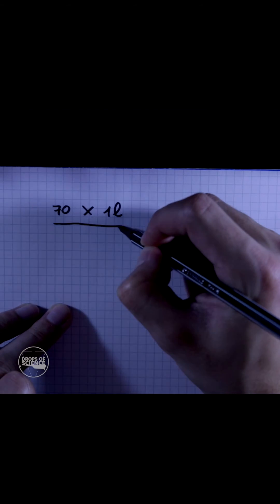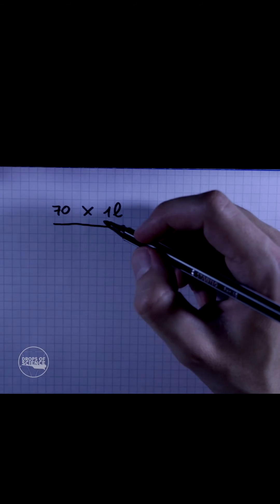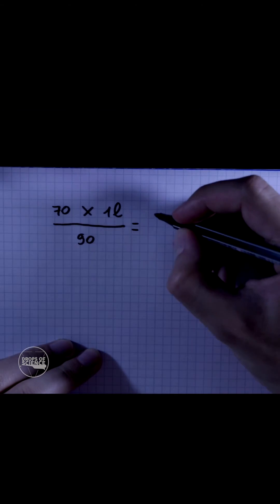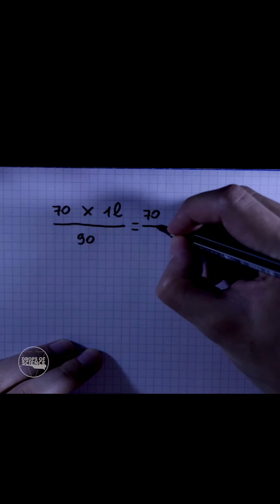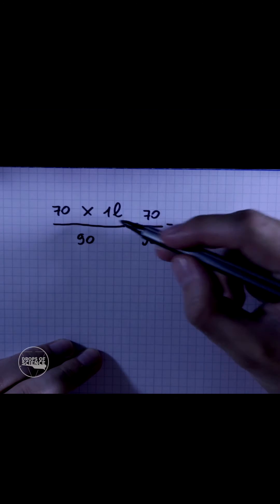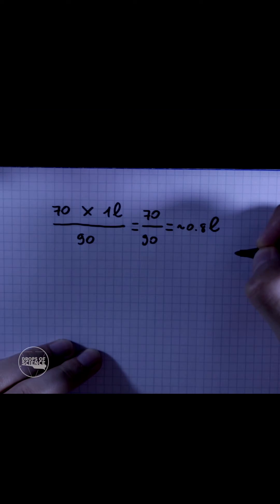And we divide everything by the concentration of the alcohol we have at home, which we said was 90%. So now this is very easy to do: it's 70 divided by 90, and this makes roughly 0.8. And since we were talking about liters, this would be 0.8 liters.